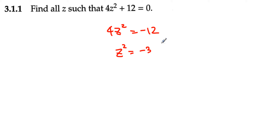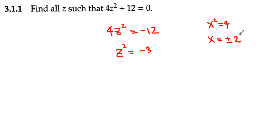Now, let me sidetrack a little bit. If I have x² is equal to 4, what would be the value of x? We know that to be naturally positive or negative 2. Likewise, in this case, when you get rid of the square by taking the square root, we end up getting plus or minus square root of negative 3.